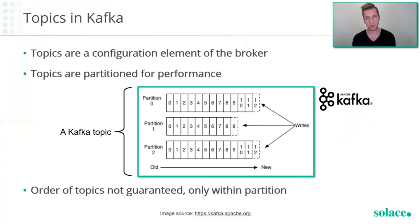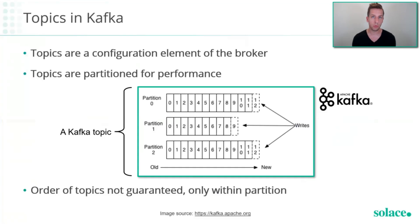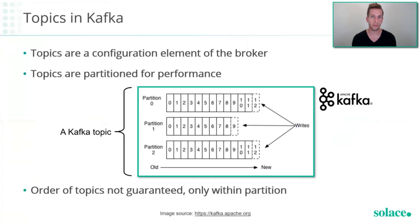Kafka topics can actually be partitioned — for performance, scalability, and load balancing — and each partition is actually a log file. So a single Kafka topic can contain multiple partitions, each being a log file. Because the partition is implemented as a log file, there is a guarantee of order among messages within a partition, but across the topic as a whole that guarantee doesn't hold, which means two consumers reading from the same Kafka topic might receive messages in different orders. Another consequence of the file-based topic system is that each partition has an open file descriptor the server needs to maintain, which puts a finite limit on the number of unique topics you can maintain in a Kafka cluster.